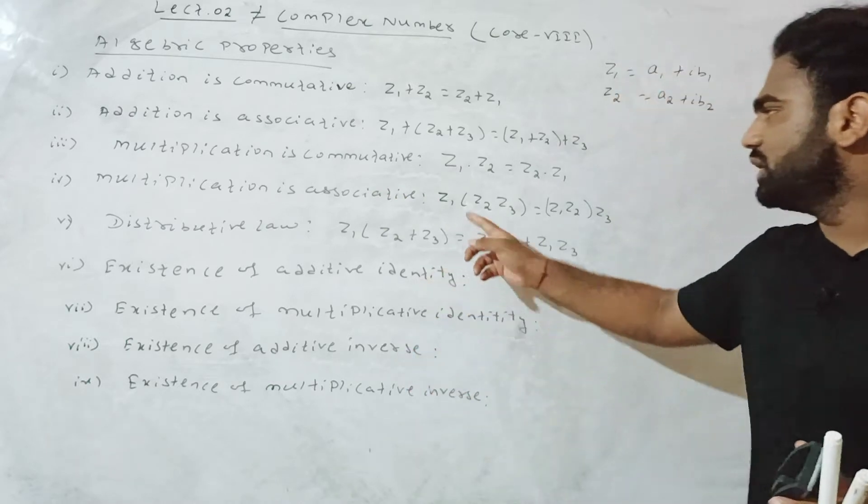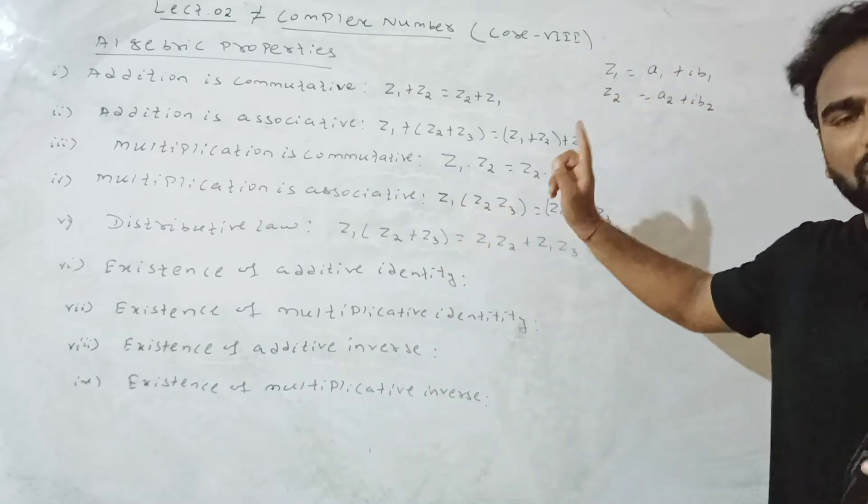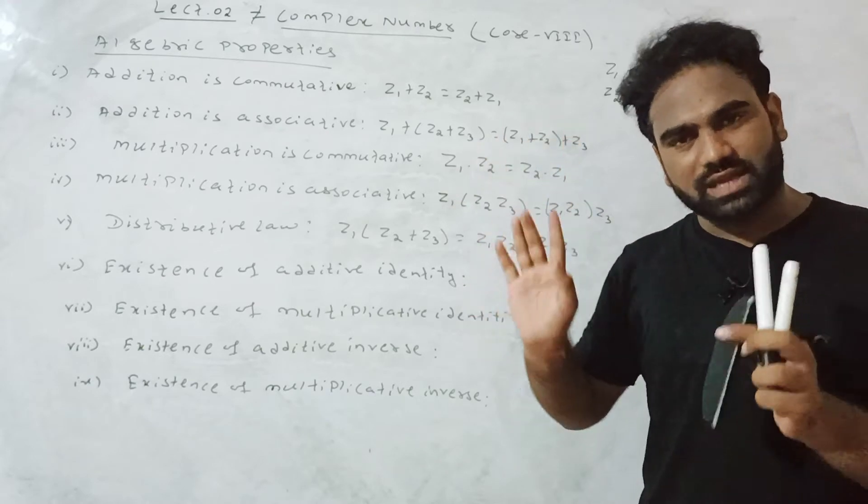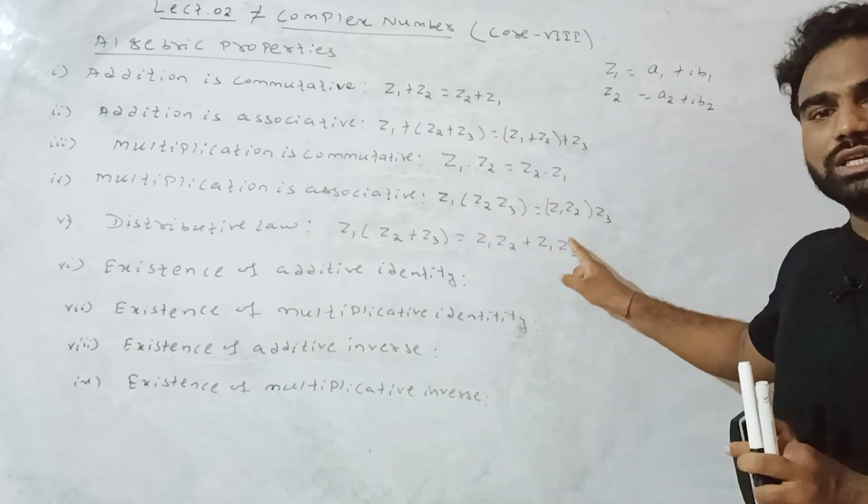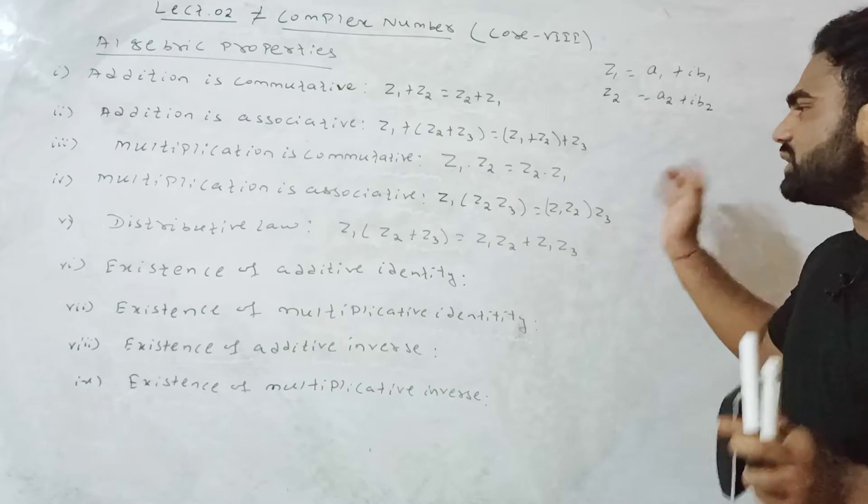Multiplication is associative also. Z1 into Z2 into Z3 equals Z1 into the quantity Z2 times Z3.